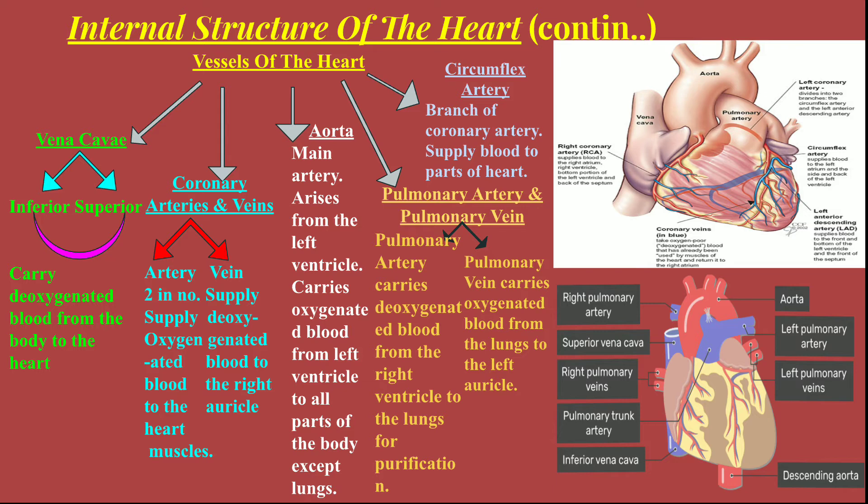The arteries and veins supplying blood to the lungs are the pulmonary arteries and veins. The pulmonary artery carries deoxygenated blood from the right ventricle to the lungs. This is the only artery that carries deoxygenated blood out of the heart — all other arteries usually carry oxygenated blood.